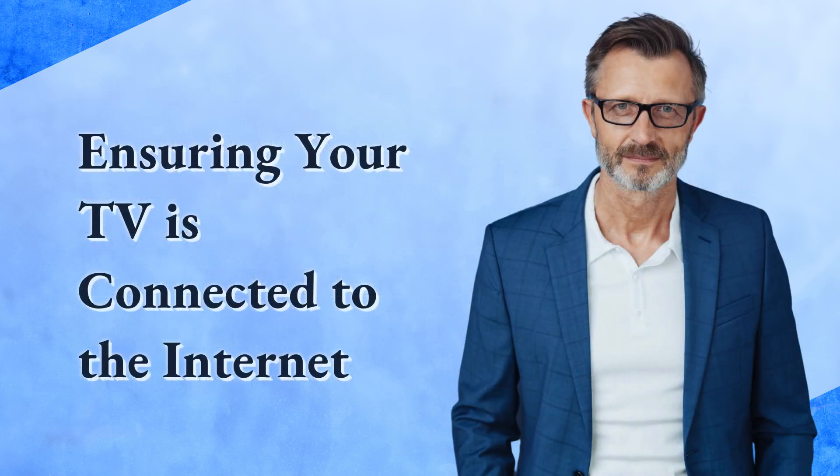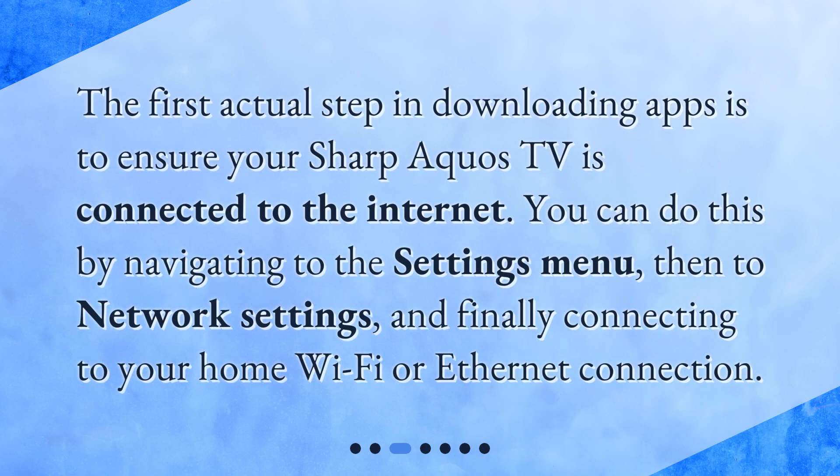The first actual step in downloading apps is to ensure your Sharp Aquos TV is connected to the Internet. You can do this by navigating to the Settings menu, then to Network Settings, and finally connecting to your home Wi-Fi or Ethernet connection.